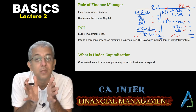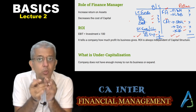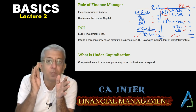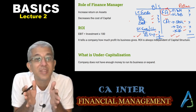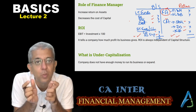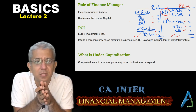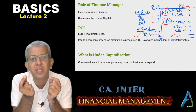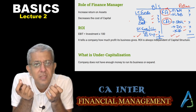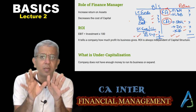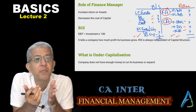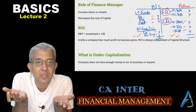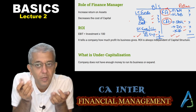On the asset side, what you get is returns. Most of the returns come from fixed assets. Current assets are only there because of the nature of the business — current assets usually do not give any returns, or if they do, those returns are very small. Any profit you get is basically because of selling goods, and to produce goods you require fixed assets.